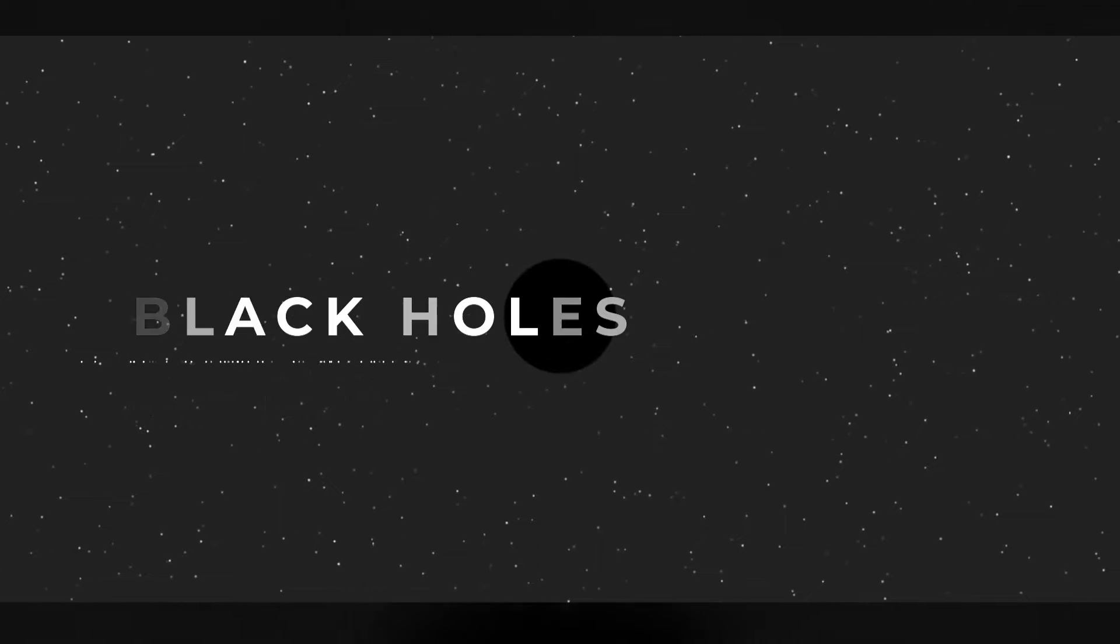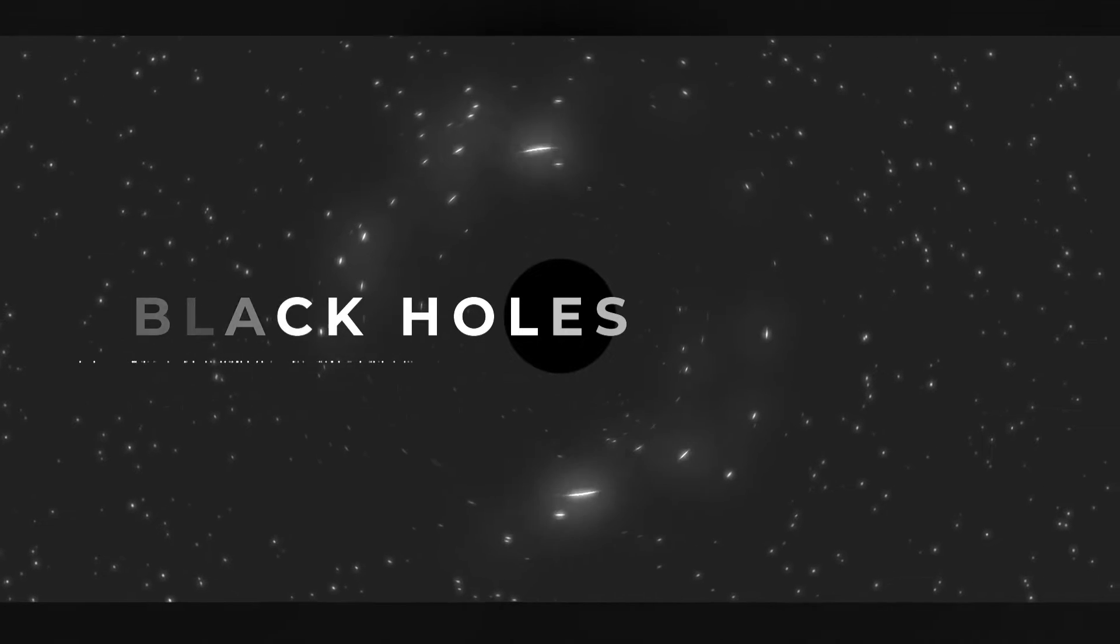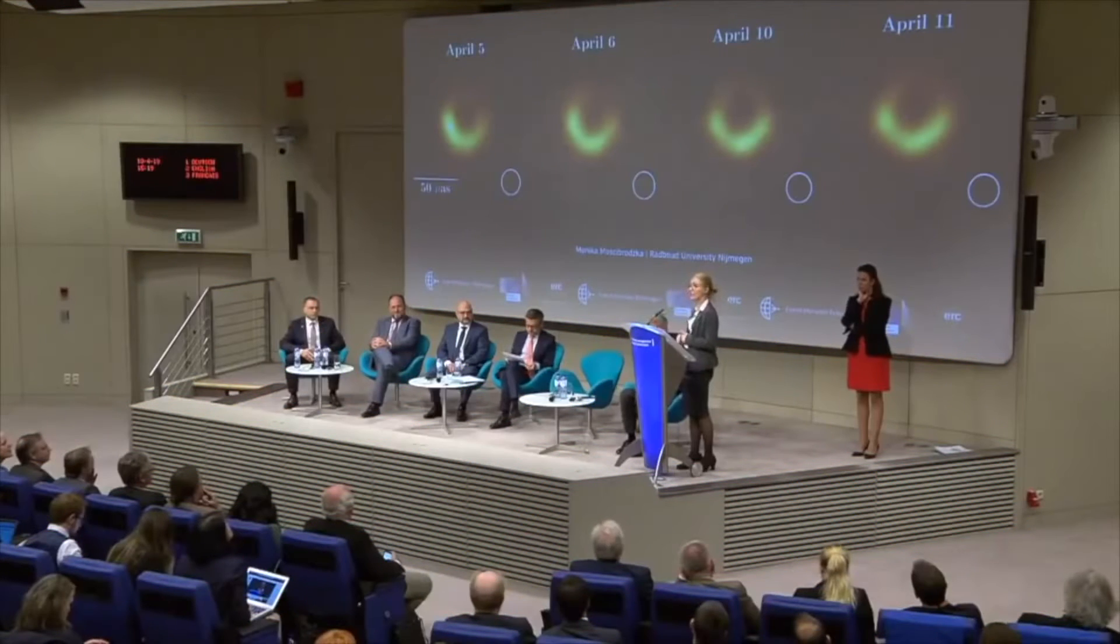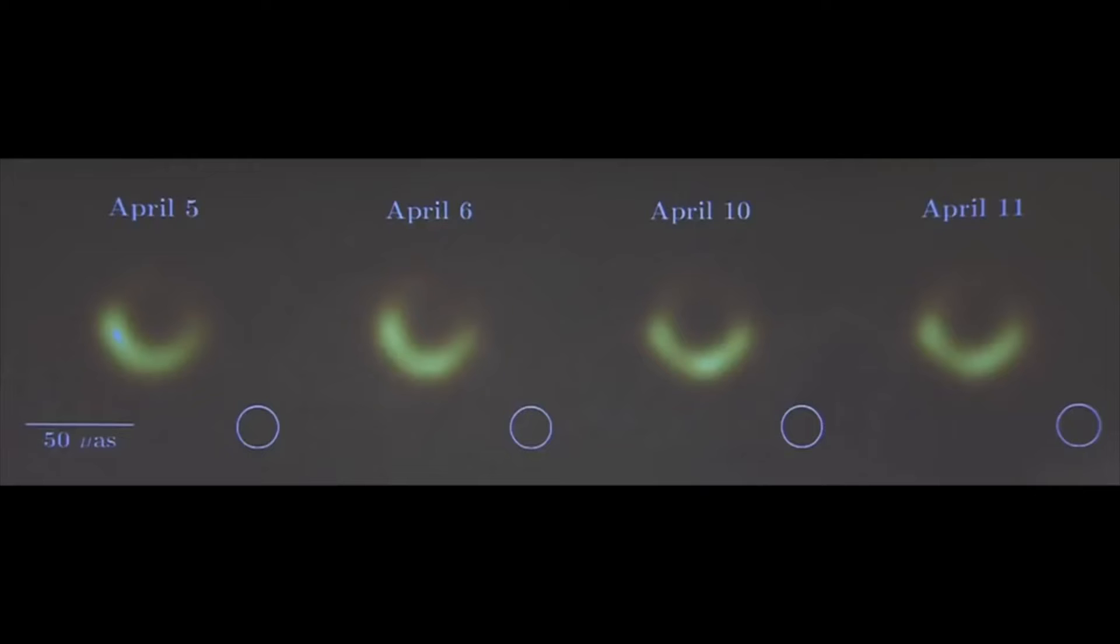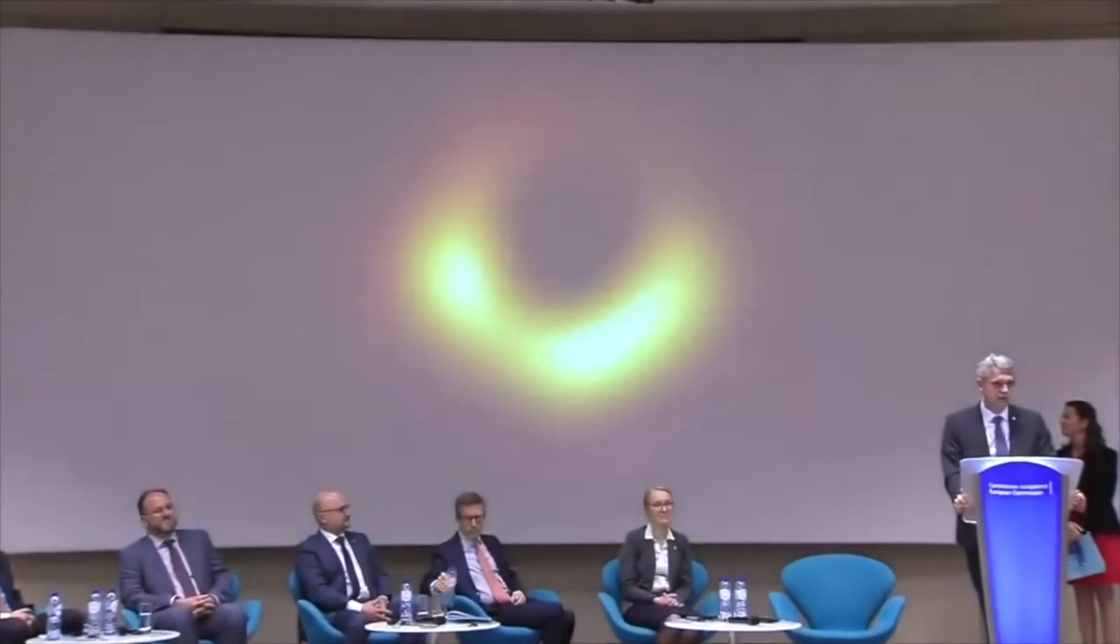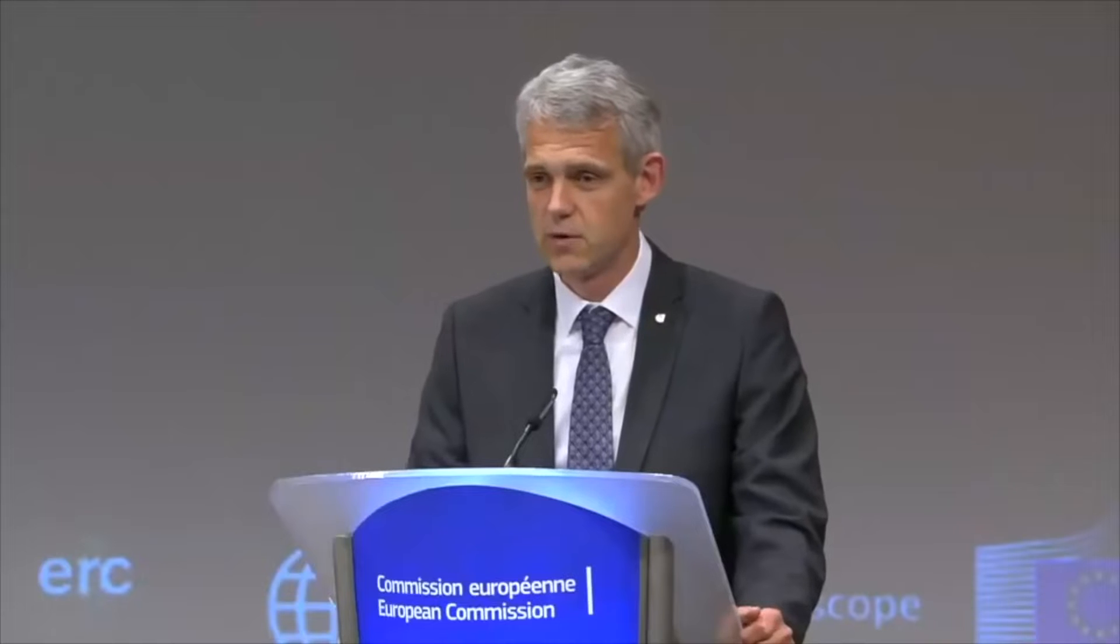One type of object that Einstein's general relativity predicted are called black holes. Many of us know that black holes exist in our universe, but for a long time they were just a piece of science fiction predicted by a theory. But more recently, astronomers were able to produce concrete evidence for their existence. This is the nucleus of the galaxy M87, and this is the first ever image of a black hole.